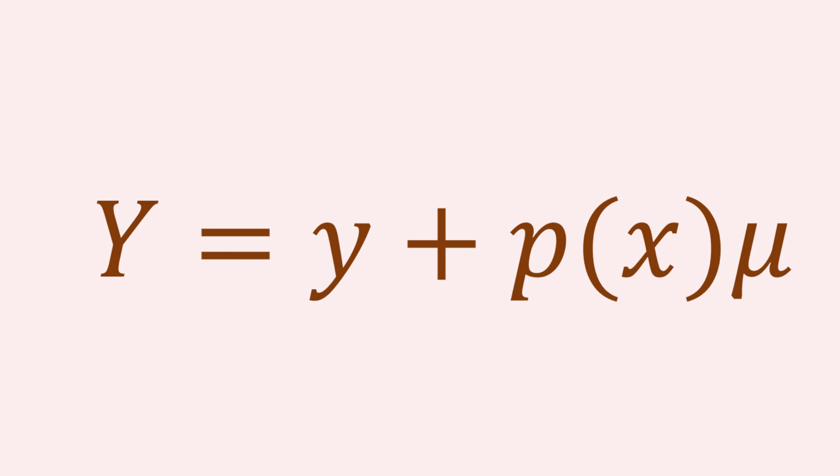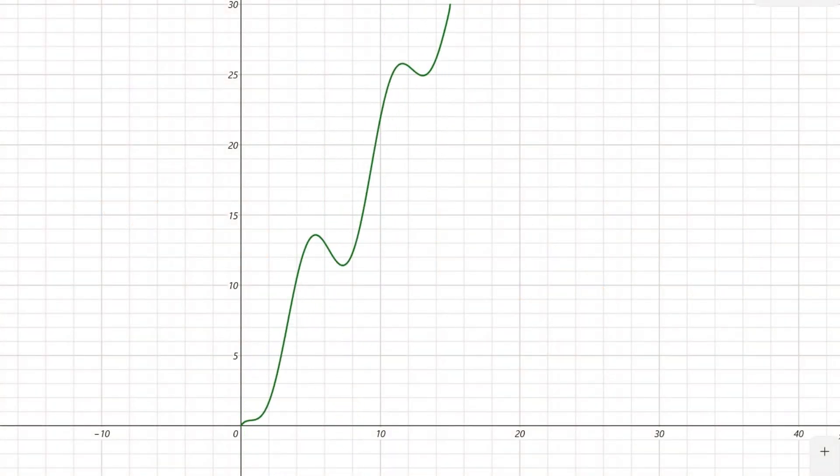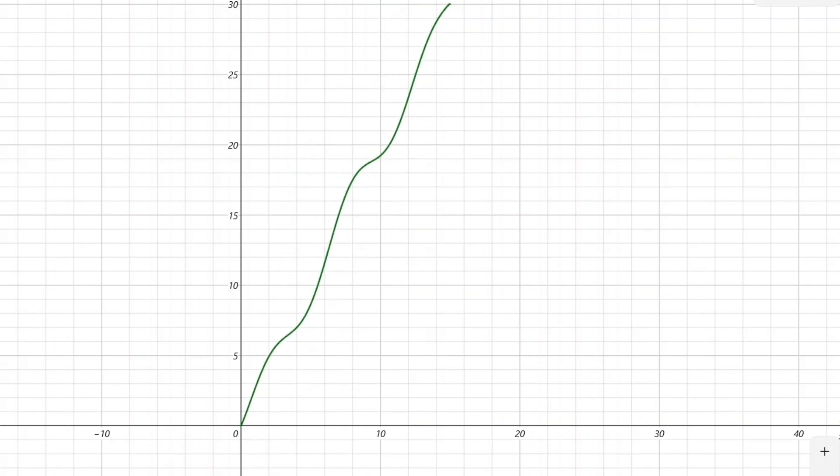With the help of this idea, we can develop a new expression as follows. In this expression, the function that we are adding to vary the original function is multiplied by a new parameter. In this expression, y is the original function, and the uppercase Y is the modified version of the original function. P of x is the random function that we add to create the error, and the amount of error is controlled by this new parameter that we are multiplying the error function with.